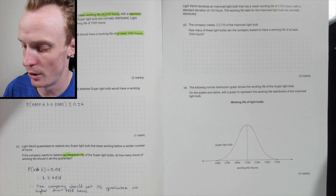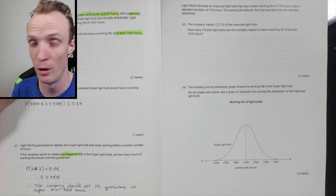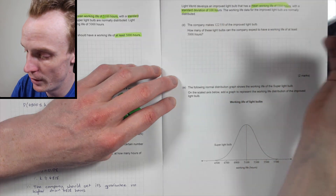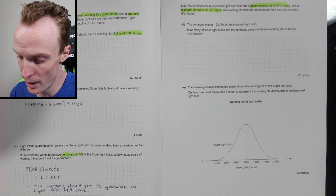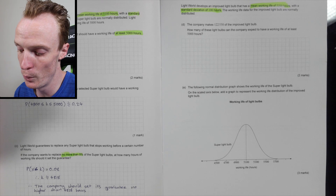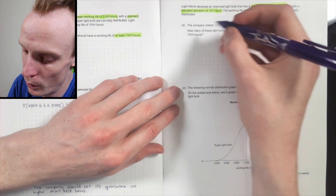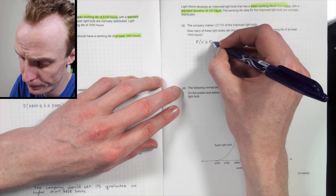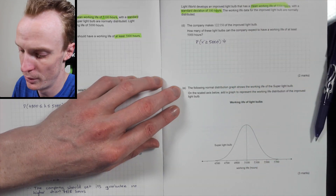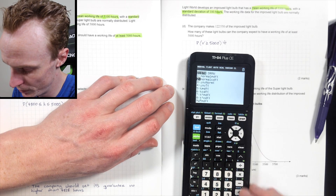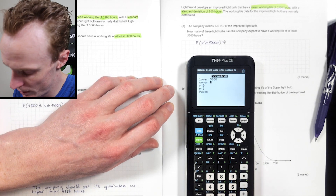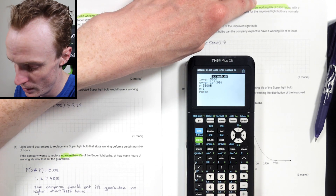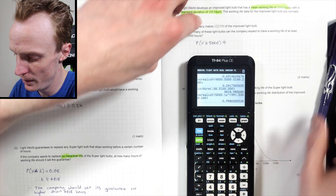Light World develops an improved light bulb with a mean working life of 5300 hours and a standard deviation of 100 hours. The working life data is normally distributed. How many of these light bulbs can the company expect to have a working life of at least 5000 hours? We need the proportion first: normal CDF with lower 5000, upper 1E99, mean 5300, standard deviation 100, which gives approximately 0.999.